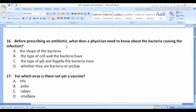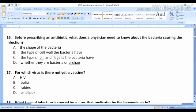Question 16: Before prescribing an antibiotic, what does a physician need to know about the bacteria causing the infection? Is it the shape of the bacteria or the type of cell wall? It's about the antibiotic. Antibiotics actually work in breaking the cell wall. If you're a physician, first you want to identify the kind, the structure, the nature of the cell wall the bacteria has. So it's all about the cell wall. Nothing mentioned about the cell wall except in B, type of cell wall the bacteria have. Yes, that determines what kind of antibiotics will be prescribed.